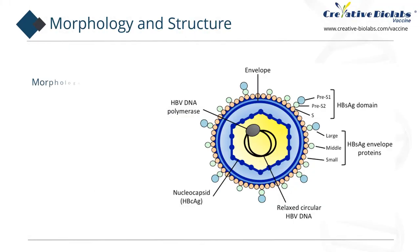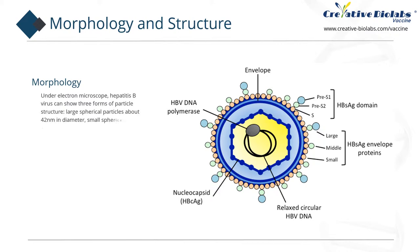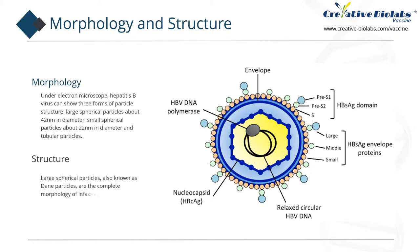Under electron microscope, hepatitis B virus can show three forms of particle structure: large spherical particles about 42 nanometers in diameter, small spherical particles about 22 nanometers in diameter, and tubular particles. Large spherical particles, also known as Dane particles, are the complete morphology of infectious viruses, consisting of an external lipid membrane and a protein nucleocapsid. The nucleocapsid encircles virus DNA and DNA polymerase, which has retrovirus-like reverse transcriptase activity.